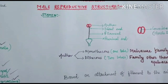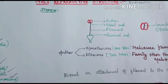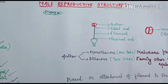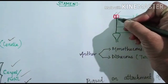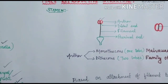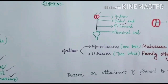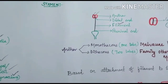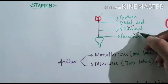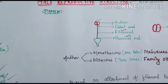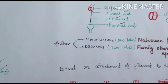Stamen is the male reproductive structure. Stamen has two parts: the upper part is a lobed or swollen head-like structure, and the lower part is a long thread-like structure. The upper part is called the anther and the lower thread-like structure is called the filament. The stamen attaches to the central axis or the petals. The point closer to the place of origin is called the proximal end, and the point further from the origin is called the distal end.